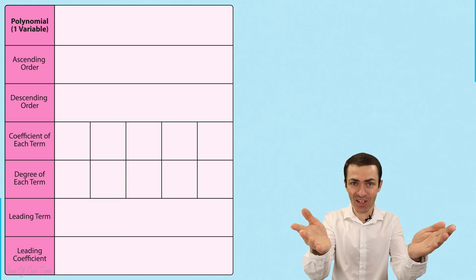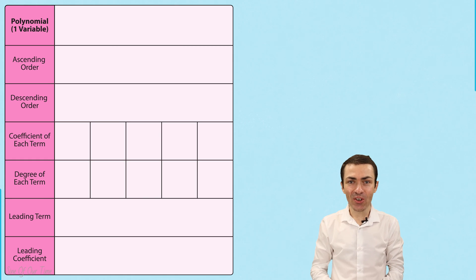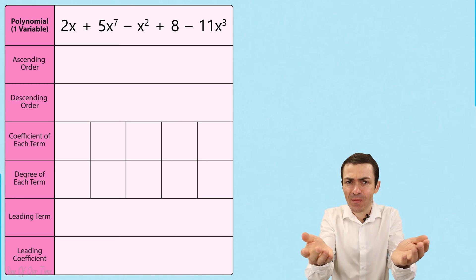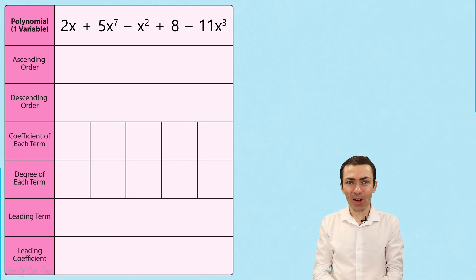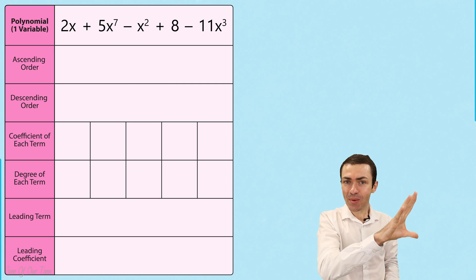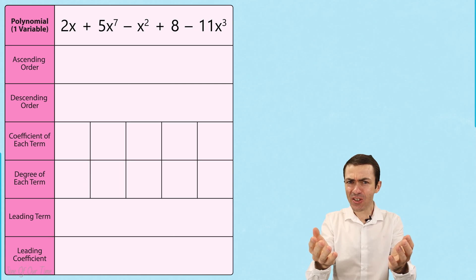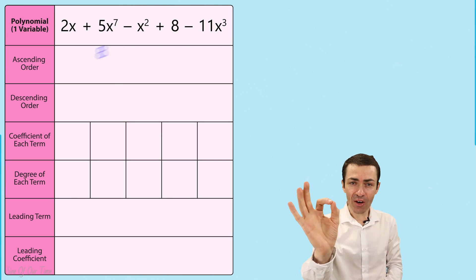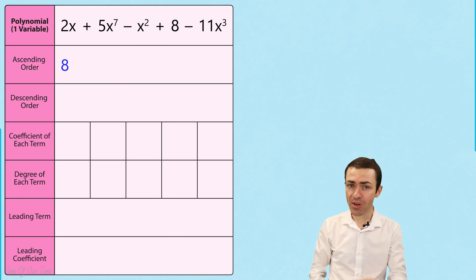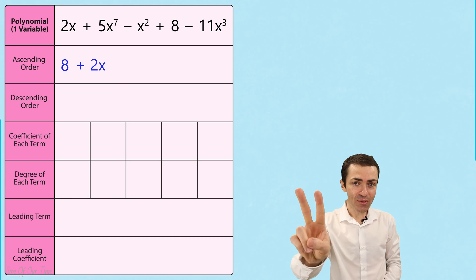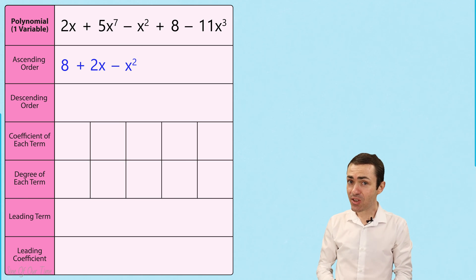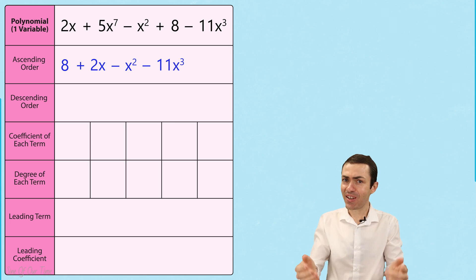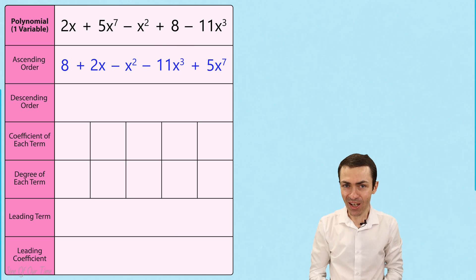So let's get started. First, let's consider a polynomial that only contains one variable, say x. We could be asked to write the polynomial in ascending order, or ascending powers of x. Ascending just means from smallest to biggest. In this polynomial, 8 has a degree of 0, 2x has a degree of 1, minus x squared has a degree of 2, minus 11x cubed has a degree of 3, and finally 5x to the power of 7 has a degree of 7, and so it is written last.